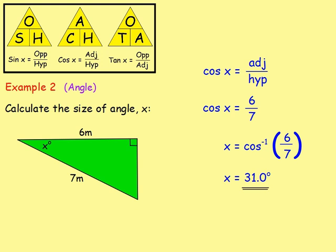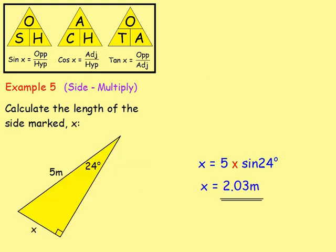We then used SOHCAHTOA to work out the size of angles or the lengths of sides. For example, to work out the size of angle X, first label the sides — the opposite is opposite your angle, the hypotenuse is opposite the right angle, and the one beside the angle is the adjacent. We were then ticking off the sides we knew when we wrote down SOHCAHTOA, to decide which one had two ticks and which formula we were going to use. We then write down cos X equals adjacent over hypotenuse and work it out from there.